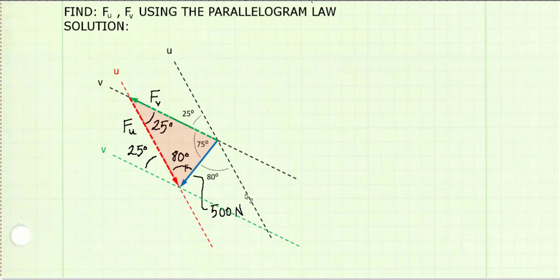Now I can find the f sub v and f sub u vector magnitudes using the law of sines. The magnitude of vector f sub v divided by the sine of its opposite angle, 80 degrees, is going to be equal to the magnitude of vector f, 500 newtons, divided by the sine of its opposite angle, 25 degrees.